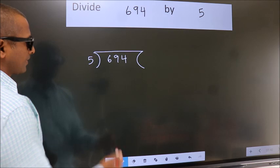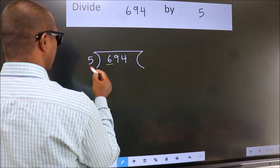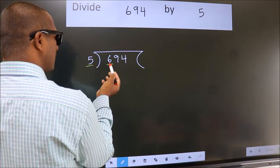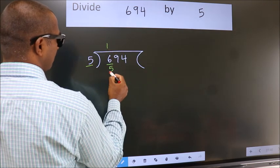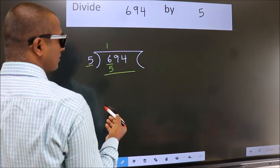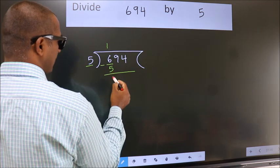Next, here we have 6, here 5. A number close to 6 in the 5 times table is 5 times 1 equals 5. Now we should subtract. We get 1.